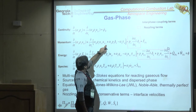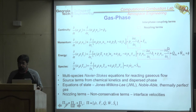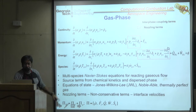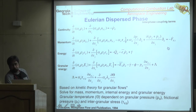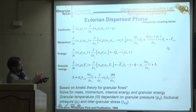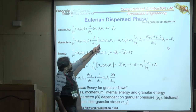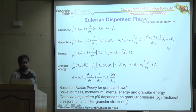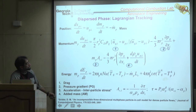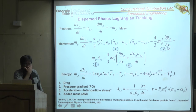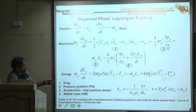Filtering the Eulerian dispersed equations would also generate subgrid model terms that nobody has yet developed — an open research problem. In practice, LES influences on spray are primarily incorporated through Lagrangian tracking, where drag is affected by local velocity fluctuations from both the resolved field and subgrid contributions included through the stochastic model.